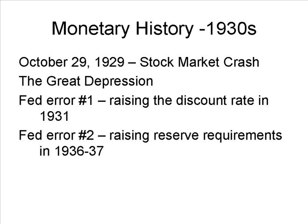Later in the 1930s, the Fed got the authority to change reserve requirements. In late 1936 and early 1937, the Fed increased reserve requirements, causing banks to want to hold too much excess reserves — perhaps because they feared bank runs. Then in 1937-38 there was some economic growth, and it looked as though the country was coming out of the depression, but there was another recession that kept the longer-term depression going. The conclusion is that there were at least two major mistakes by the Fed during the 1930s: not doing the discount lending, and raising the reserve requirements.